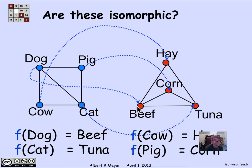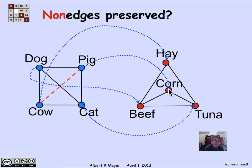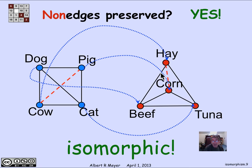Now I have to check that the edges are preserved. There's an edge on the left between dog and pig, so there should be an edge on the right between where they map to — between beef and corn. And indeed, there's an edge there. Edge-preserving is an if-and-only-if: there's an edge on the right if and only if there's an edge on the left. So let's also check non-edges: there's no edge between cow and pig, and indeed there's no edge between hay and corn on the right. These two graphs are isomorphic, and f is the edge-preserving bijection.